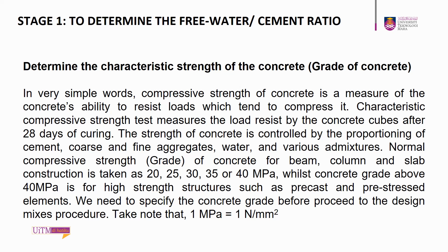Normal compressive strength or grade of concrete for beam, column, and slab construction is taken as 20, 25, 30, 35, or 40 MPa. While concrete grade above 40 MPa is for high strength structures such as precast and pre-stressed elements. We need to specify the concrete grade before proceeding to the design mixes procedure. Please take note that 1 MPa is equal to 1 N per mm square.